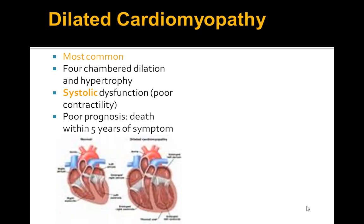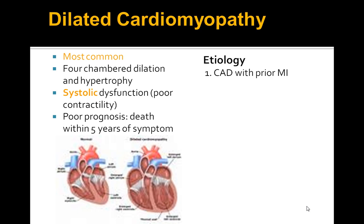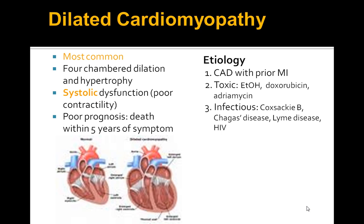It has a bad prognosis. The etiologies include coronary artery disease with prior MI, alcohol abuse, and drugs such as doxorubicin or adriamycin — these are commonly asked on boards. Infectious causes include Coxsackie B virus, Chagas disease (very high yield), as well as Lyme's disease and HIV.